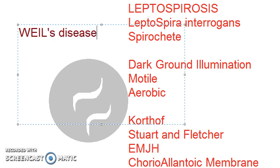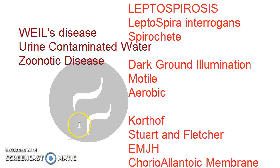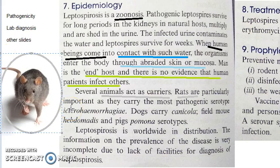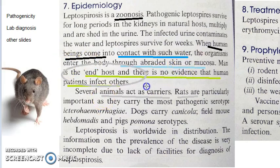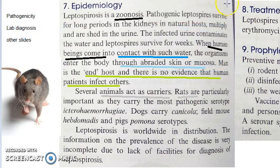Leptospirosis comes from water contaminated with urine of carrier animals — it is a zoonotic disease. Rats are a very important carrier. Humans are incidental hosts; one human does not infect another. Humans get affected when they come in contact with water contaminated with urine of carrier animals. There is no evidence that human patients infect other humans.